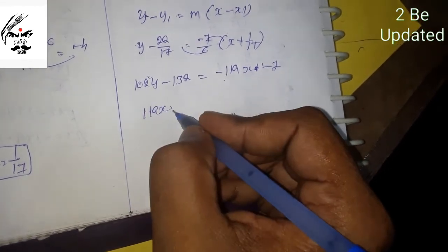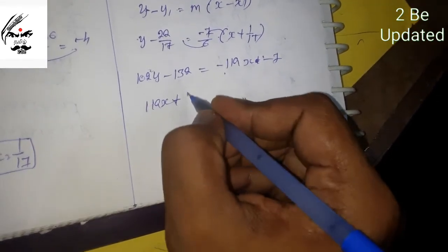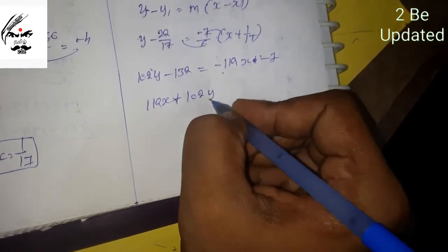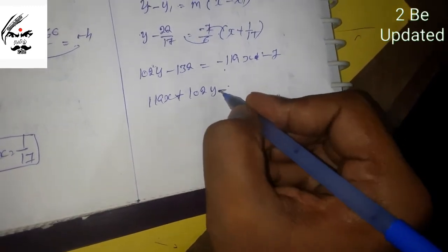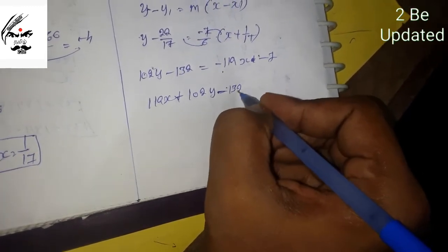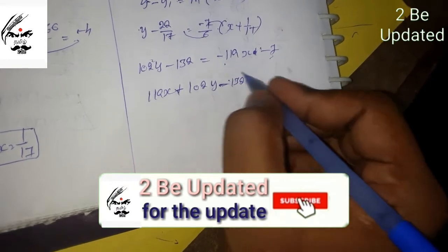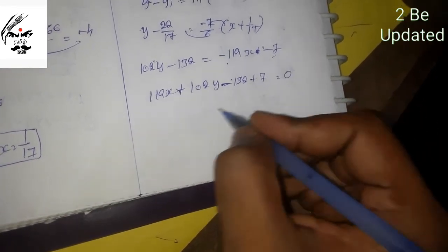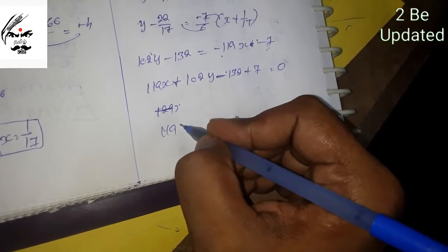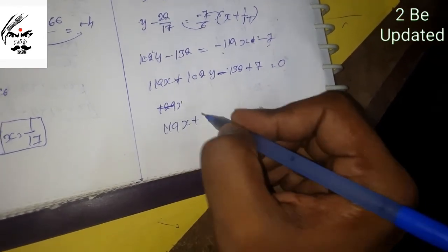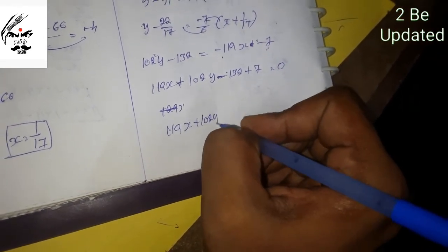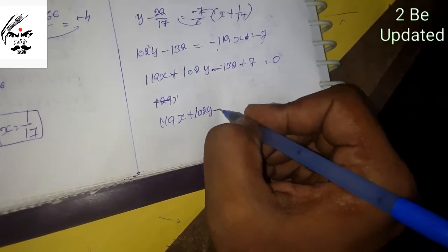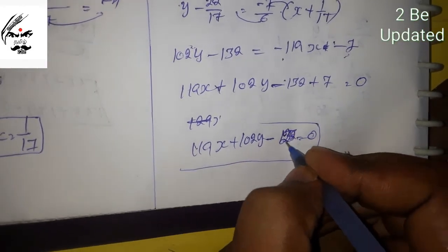Rearranging: 119x plus 102y minus 132 minus 7 equal to 0. So the final equation is 119x plus 102y minus 125 equal to 0.